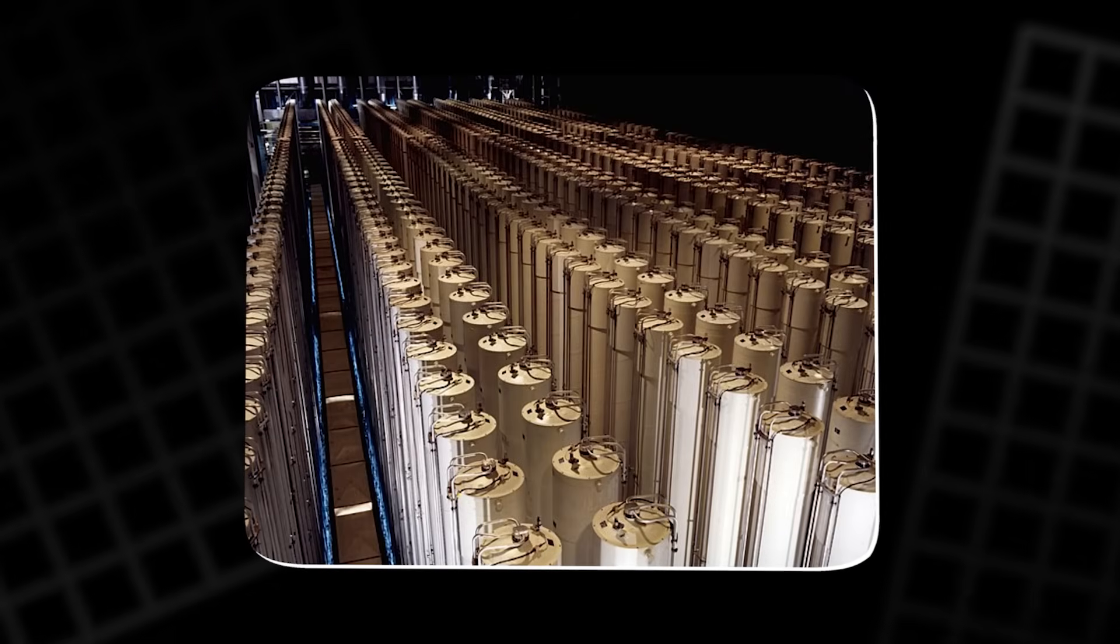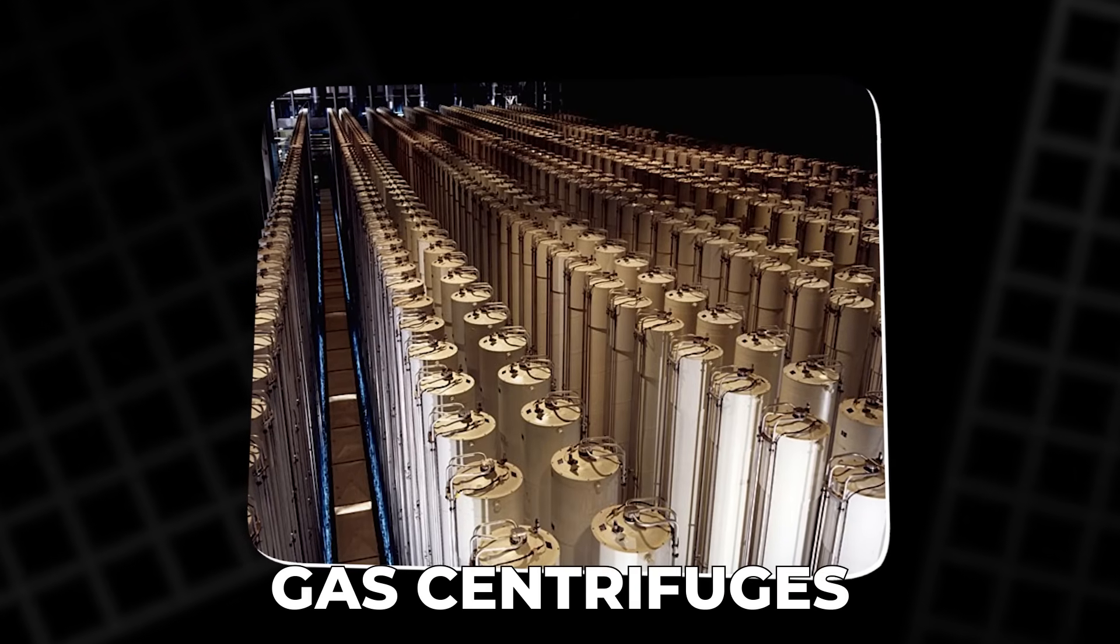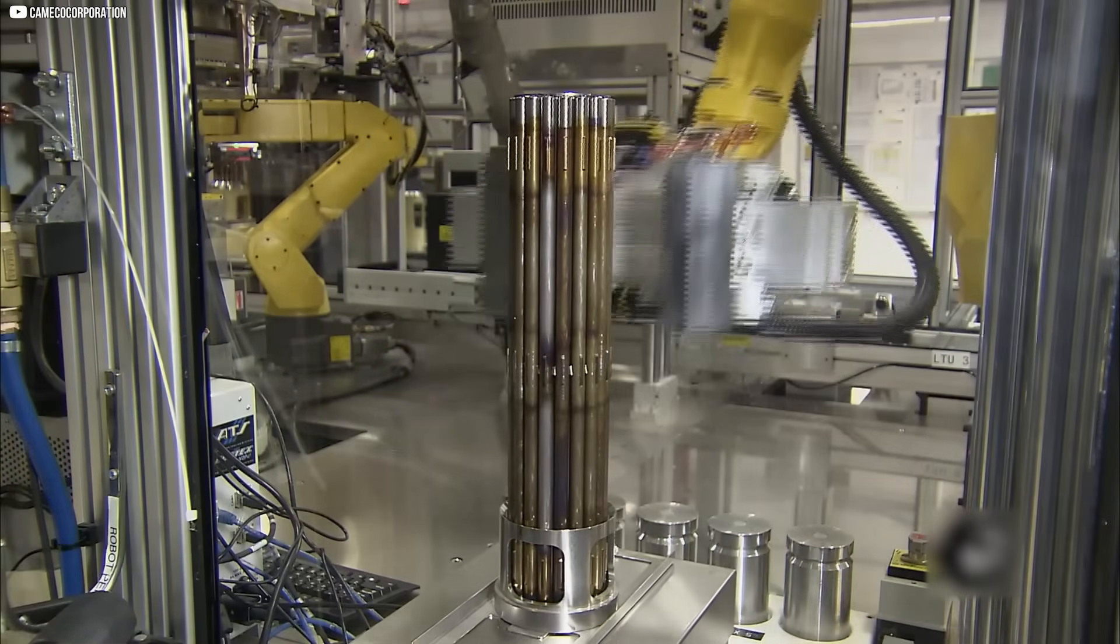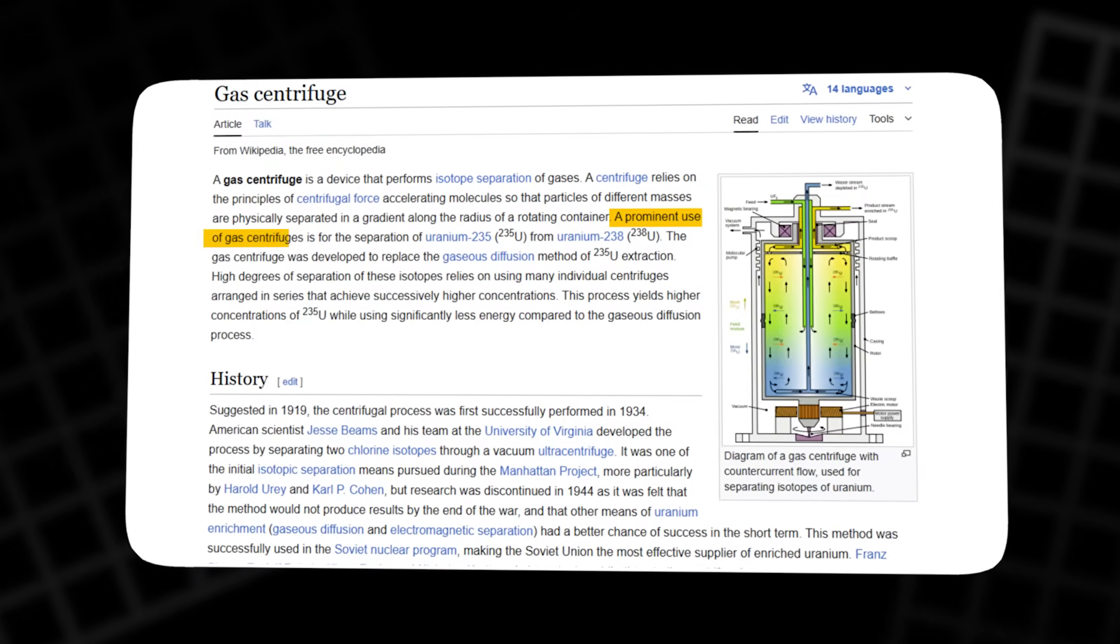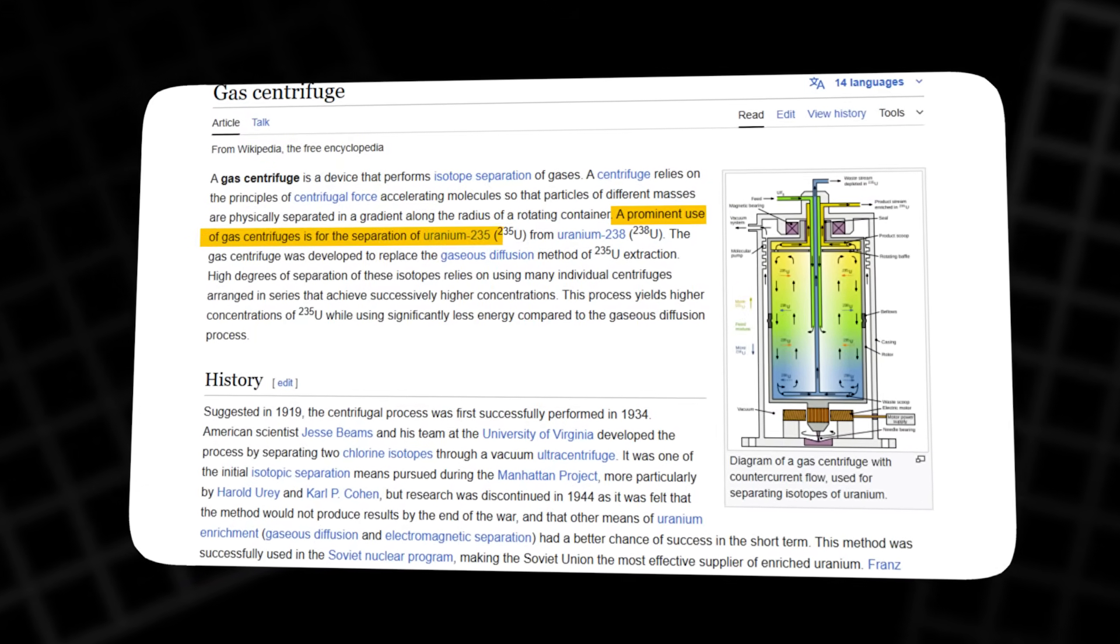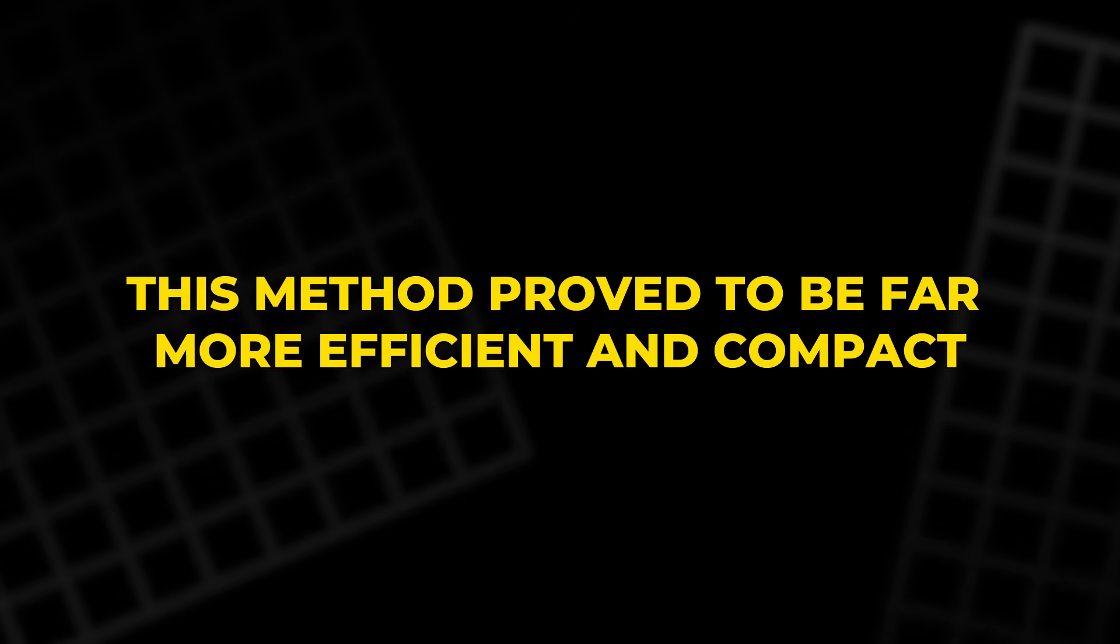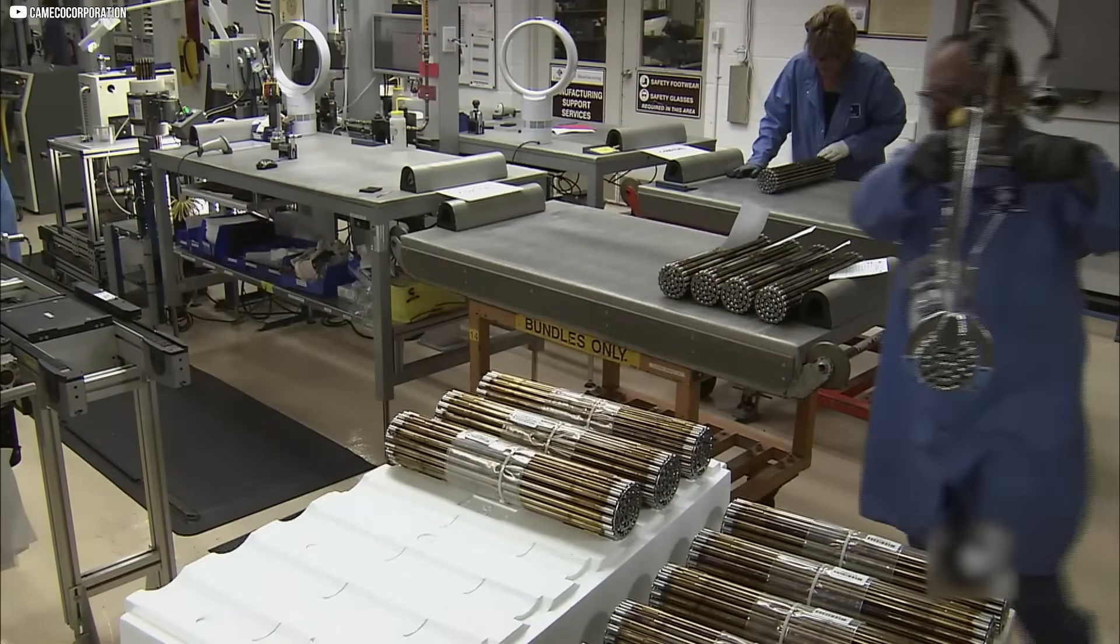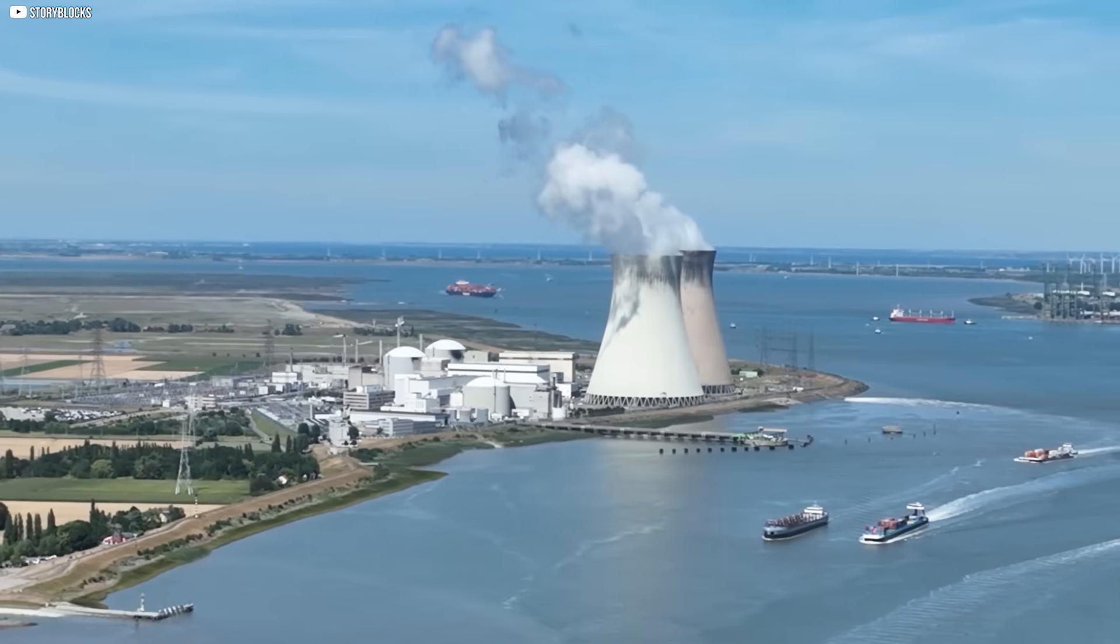The real breakthrough came in the 1950s with the advent of gas centrifuges. These high-speed machines spin uranium hexafluoride gas at incredible speeds, using centrifugal force to separate the lighter uranium-235 from the heavier uranium-238. This method proved to be far more efficient and compact, revolutionizing the enrichment process and making nuclear energy more viable on a large scale.